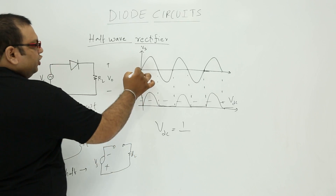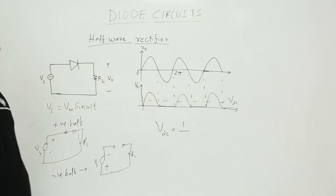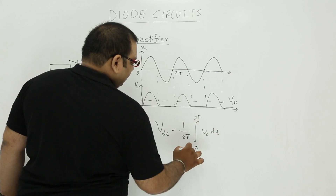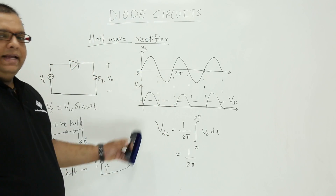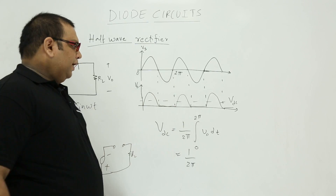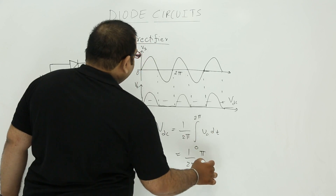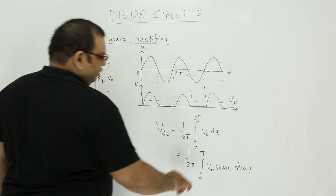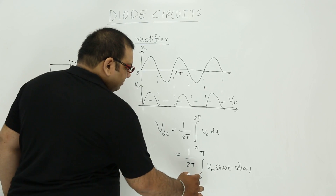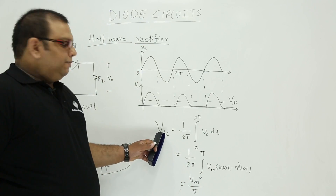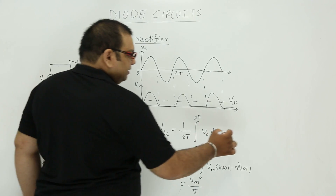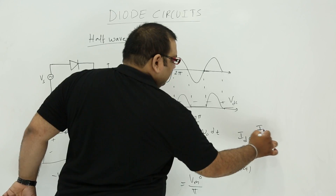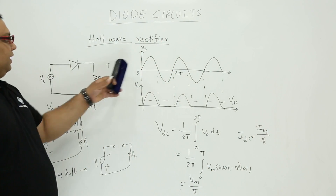To calculate the DC voltage, the formula is: Vdc equals the average value. Taking the period from 0 to 2π, it is (1/2π) times the integral from 0 to 2π of V0 d(ωt). Since output is only present from 0 to π, we consider only 0 to π: V0 equals Vm·sin(ωt)·d(ωt). Doing the integration we get Vdc = Vm/π. Similarly, Idc = Im/π, where Vm is the peak voltage and Im is the maximum current.